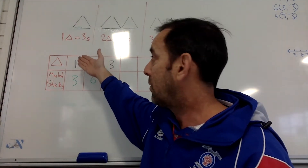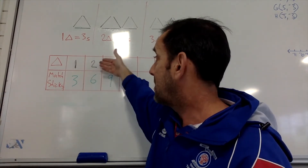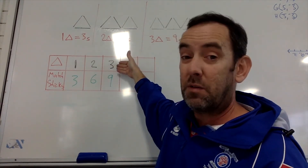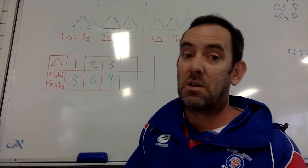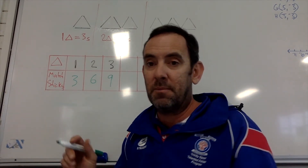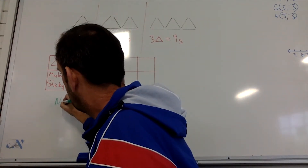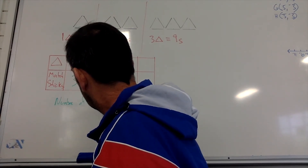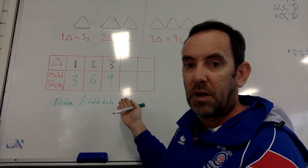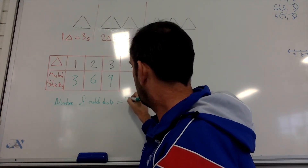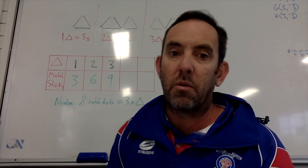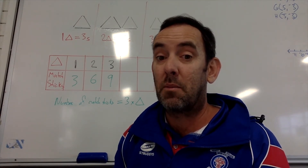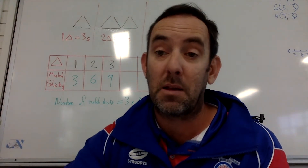For the first one: one triangle, three times one equals three matchsticks. Second one: two triangles, three times two equals six matchsticks. Third one: three triangles, three times three equals nine matchsticks. So our basic rule is going to be: the number of matchsticks equals three times the number of triangles.